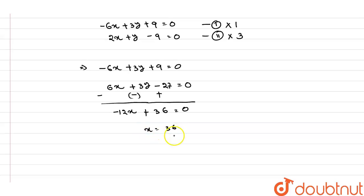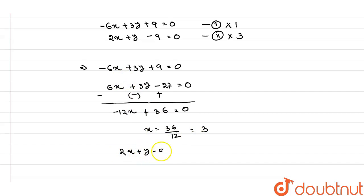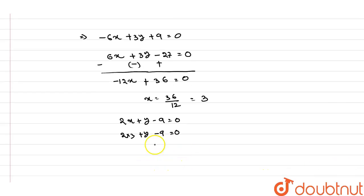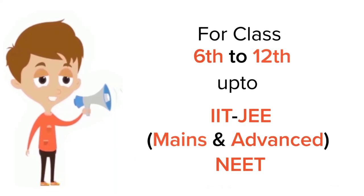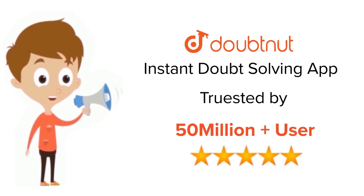Substituting x = 3 into equation 2: 2(3) + y − 9 = 0, so y = 9 − 6 = 3. Therefore the center is (x, y) = (3, 3). That is the answer. For Class 6 to 12, IIT JEE and NEET level — trusted by more than 5 crore students. Download the Doubtnut app today.